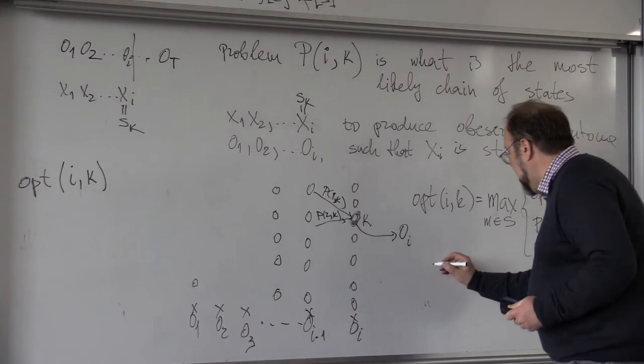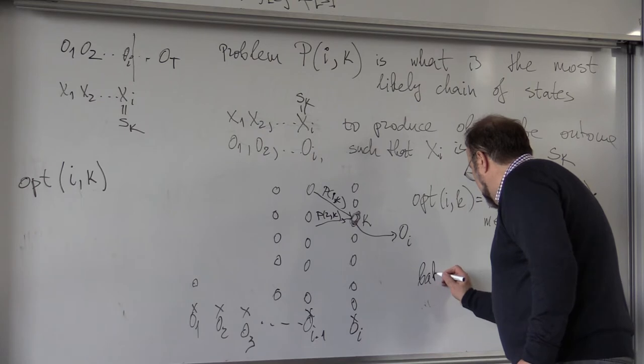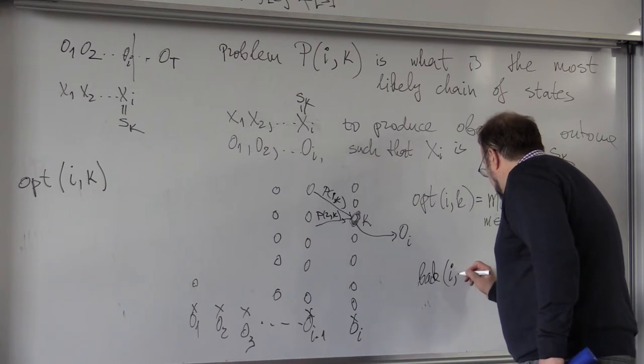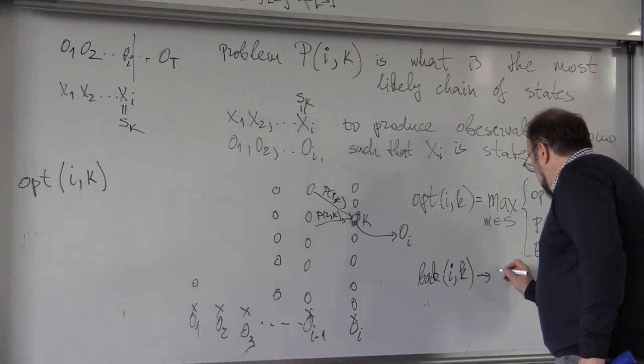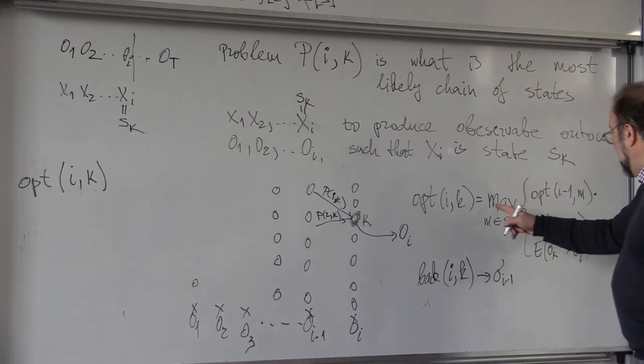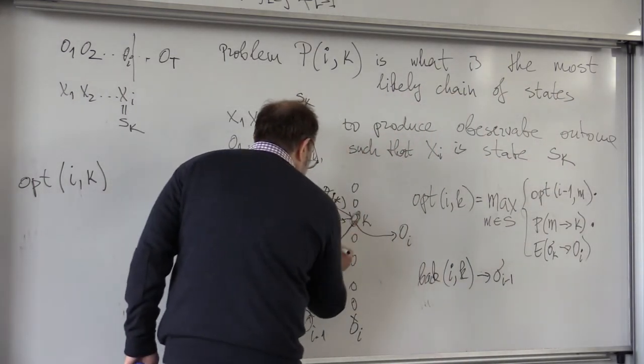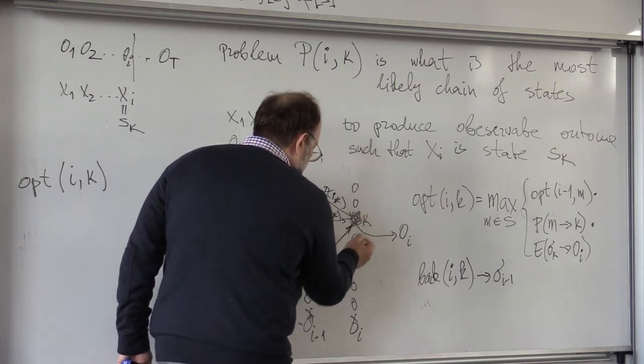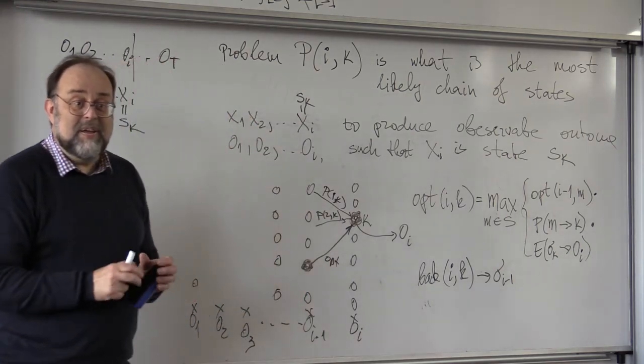And then at the end, of course, you can also have backtracking, which is, for I and output K, it tells you what is the state sigma I-1 that has, where the optimum was achieved here. So this is optimal, so you have a pointer from the I-th state to the state from which you arrived in an optimal way.